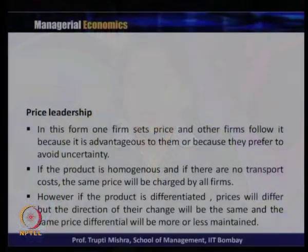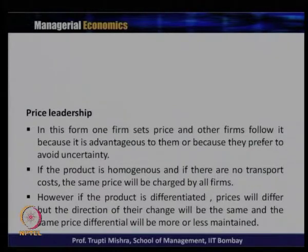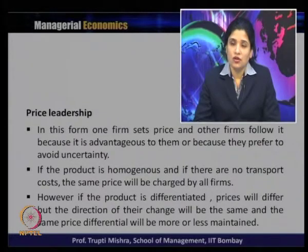We will discuss the price leadership model in three contexts: when price is decided by a low cost firm, when price is decided by a dominant firm, and when price is decided by the barometric firm. Price leadership is a form where one firm sets the price and other firms follow it, either because it is advantageous to them or because they prefer to avoid uncertainty. The major objective of collusion is to avoid uncertainty in terms of profit and market sustainability.